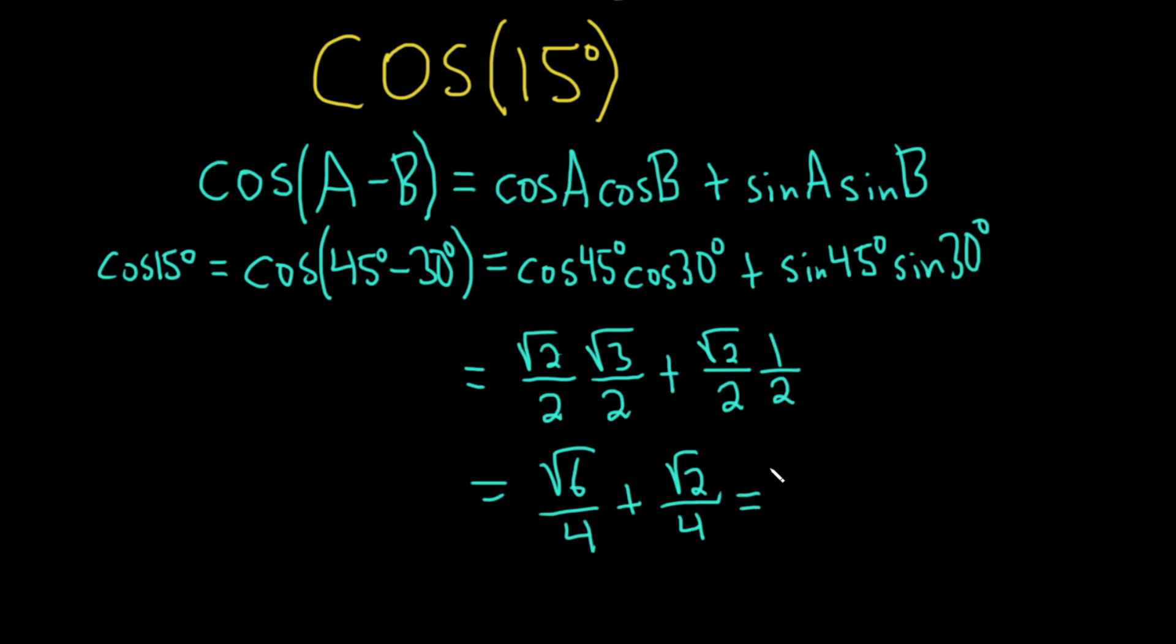Because we have a common denominator, we can write this as a single fraction. This is the square root of 6 plus the square root of 2, all being divided by 4. And that would be the exact value of the cosine of 15 degrees. I hope this has been helpful.